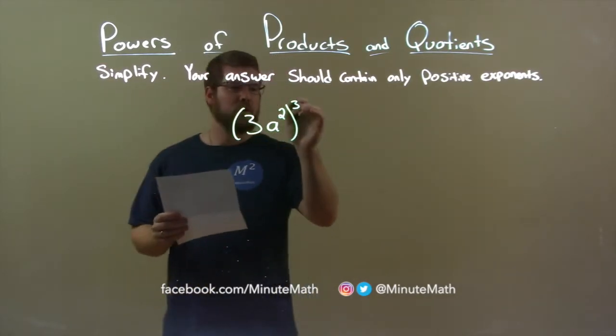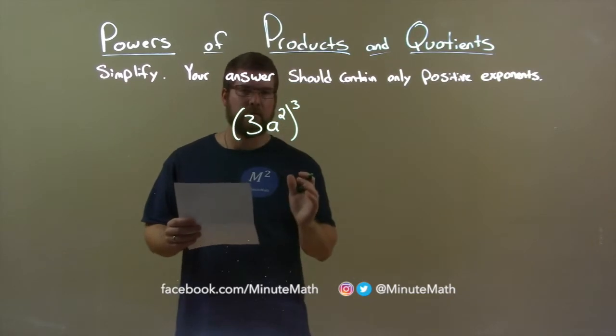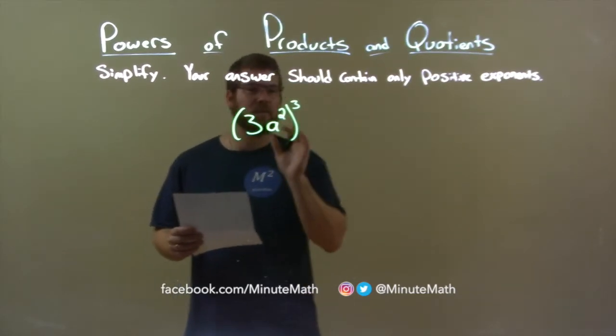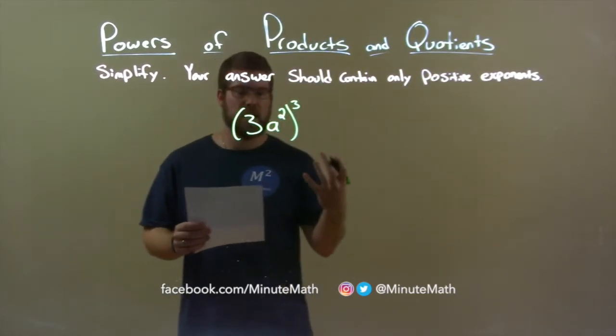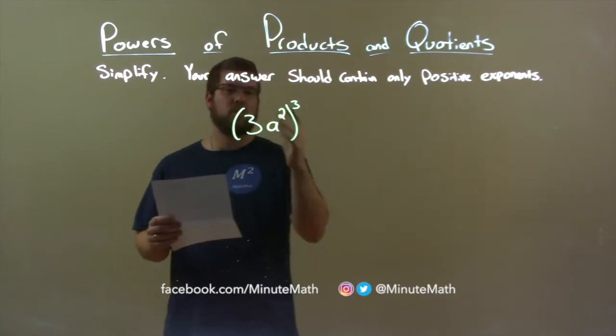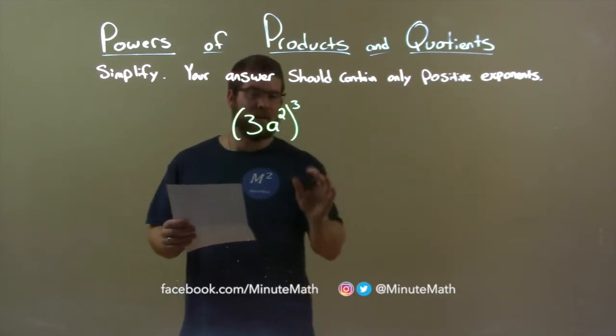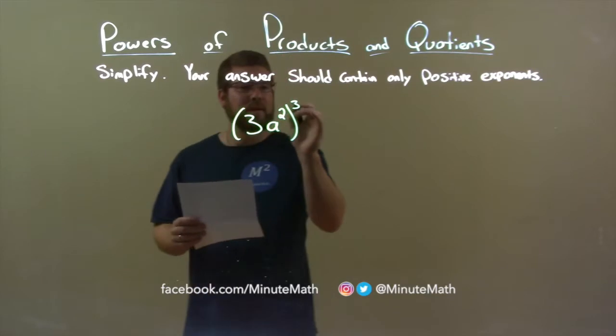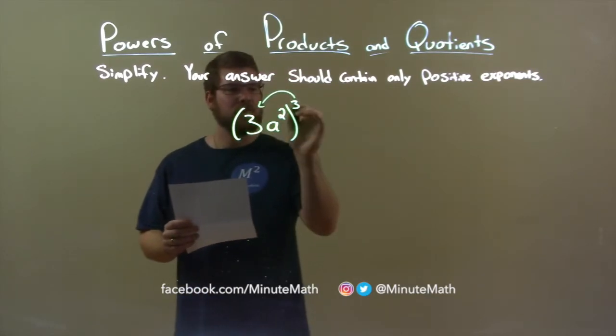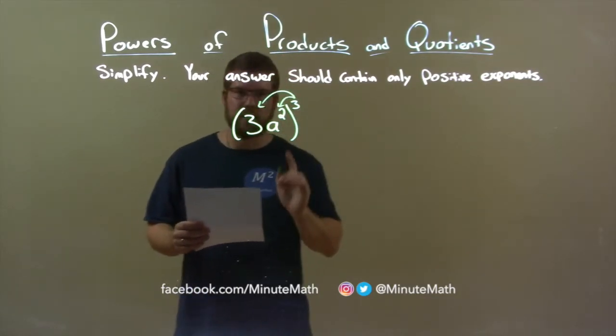When we take this third power over the whole parenthesis, it's like taking what's on the inside and multiplying it three times, the same thing three times, not by three. So when we distribute this third power, we distribute it to the exponents.